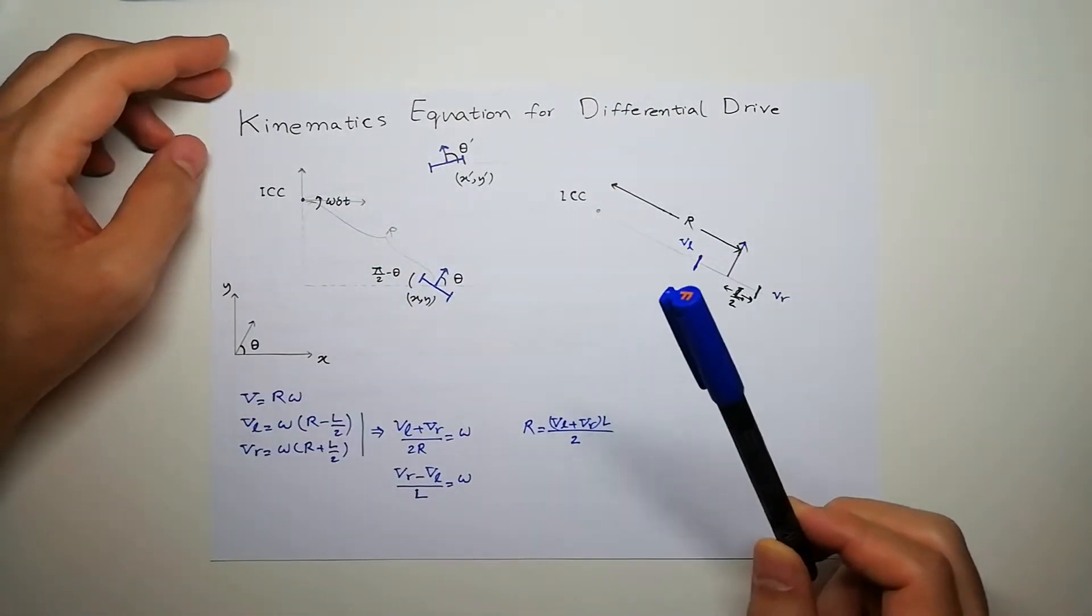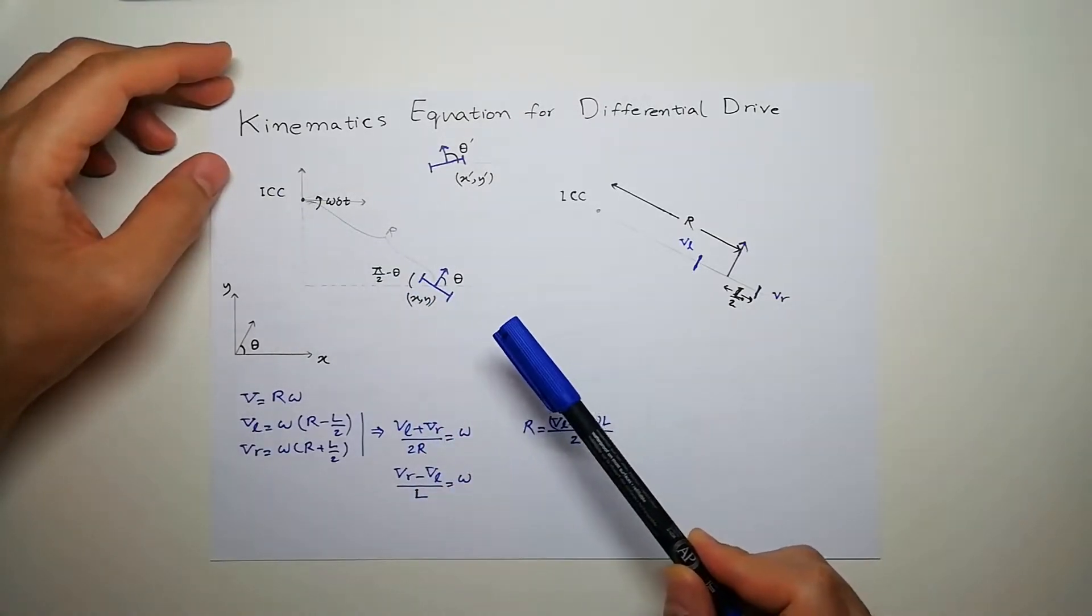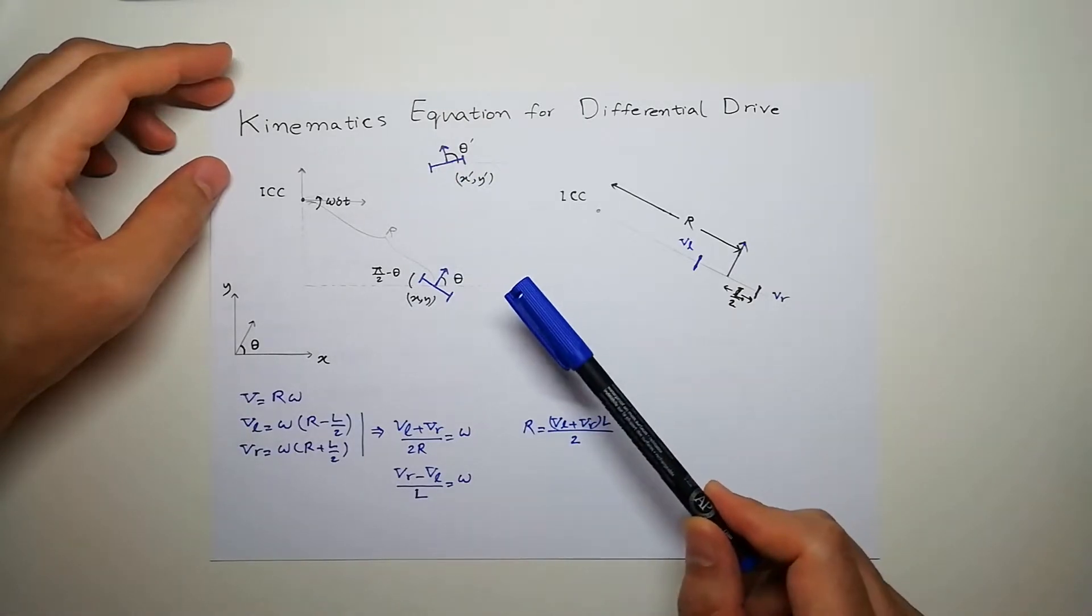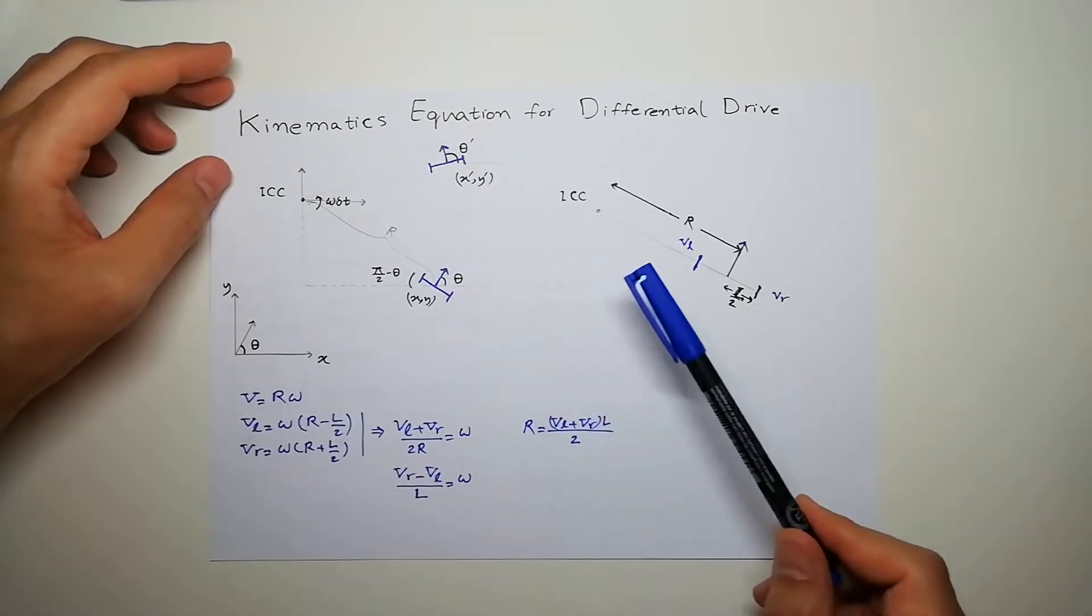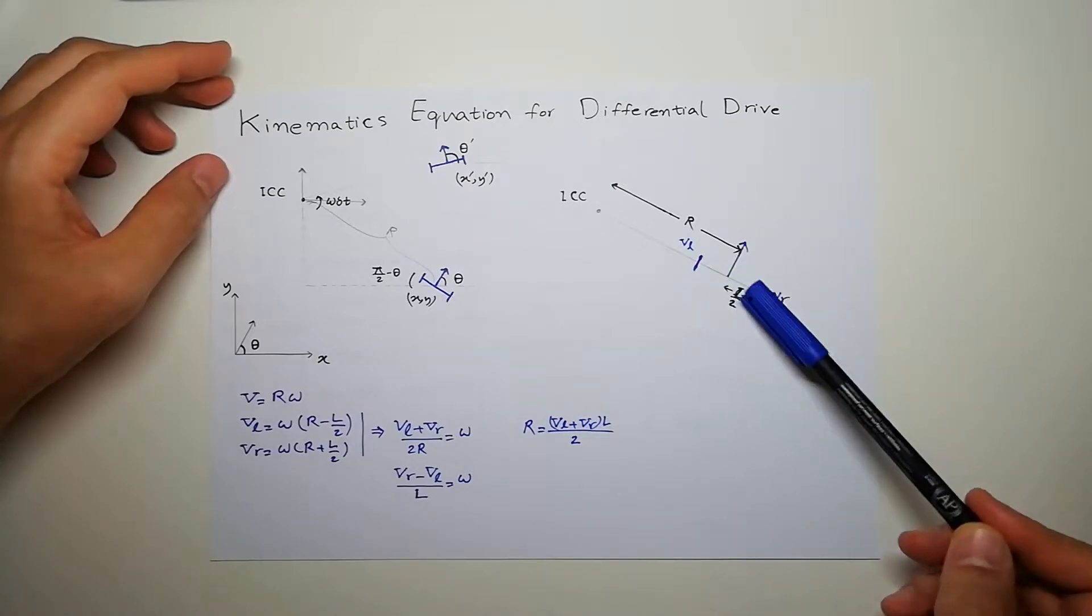So let's find a parameter. We have R which is the radius for this rotation and theta and theta-prime. So the length of the robot is L.